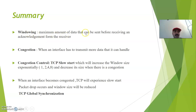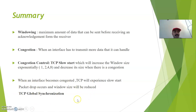That is what we call TCP slow start — a mechanism for controlling congestion. Windowing is the maximum amount of data that can be sent before receiving an acknowledgement. TCP slow start increases the window size exponentially, and when there is congestion, it automatically decreases the window size. This process is called TCP slow start. When an interface becomes congested, TCP will experience slow start — exponentially increasing the window size — and if there is congestion, the window size will be decreased. This process is called TCP global synchronization.